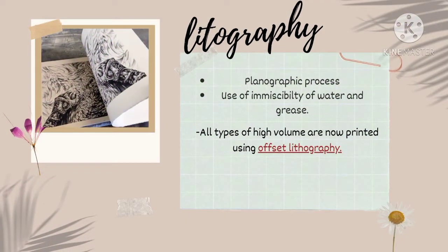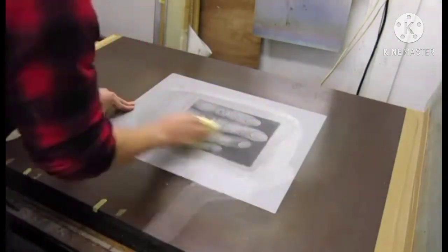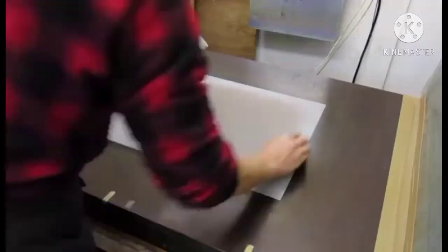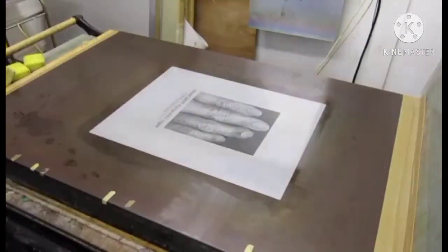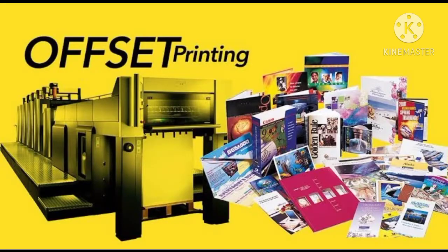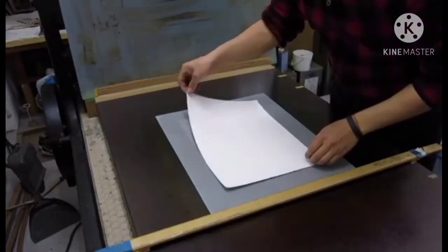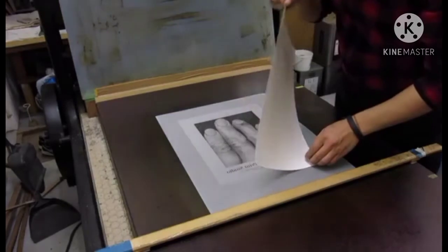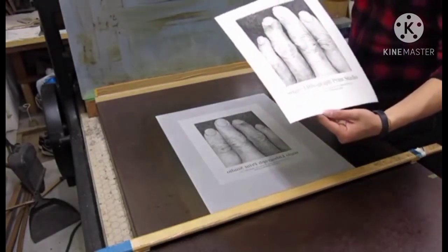Lithography is a planographic process that uses the immiscibility of water and grease, in which ink is applied to a grease-treated image on a flat printing surface, and the moisture of the blank areas repels the lithographic ink. This kind of printmaking uses offset printing, wherein the ink image is transferred from a plate to a rubber blanket and then to the printing surface. Only the area drawn on the surface is printed.